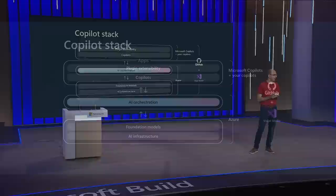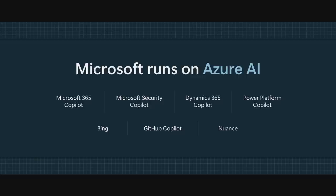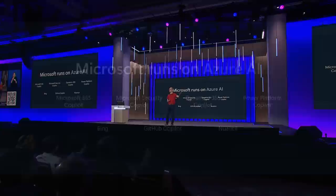Let's switch gears and talk about a deep dive into what we call AI orchestration. AI orchestration involves grounding, prompt design and engineering, evaluation, and AI safety — these are the core fundamentals for creating great Copilot experiences, and this is exactly how Microsoft created all of our Copilots. The pace of AI innovation from Microsoft over the last five months has been intense — we've introduced GitHub Copilot, Dynamics 365 Copilot, Power Platform Copilot, Microsoft 365 Copilot, Security Copilot, Nuance, Bing, and more.